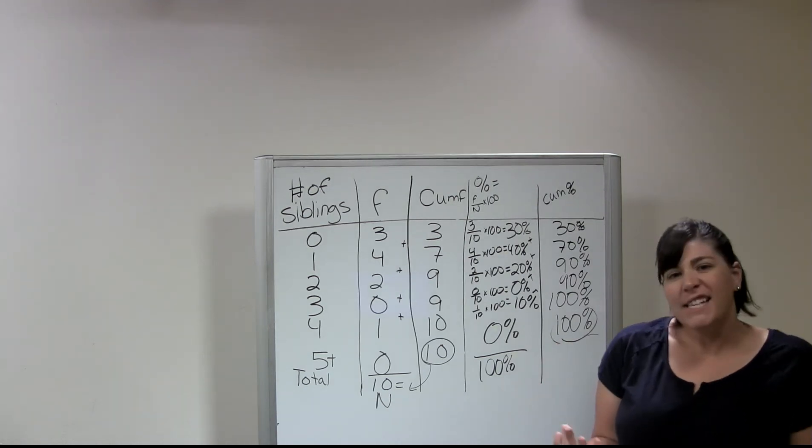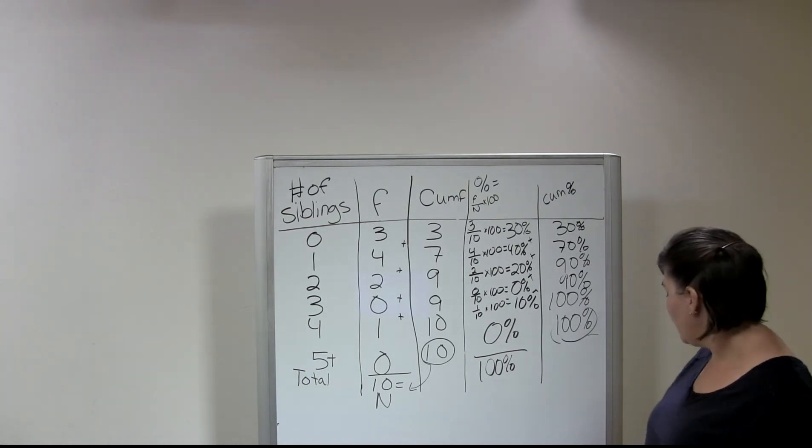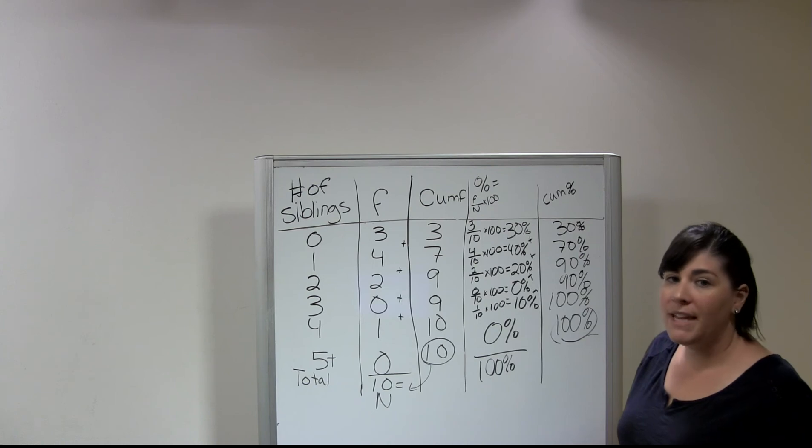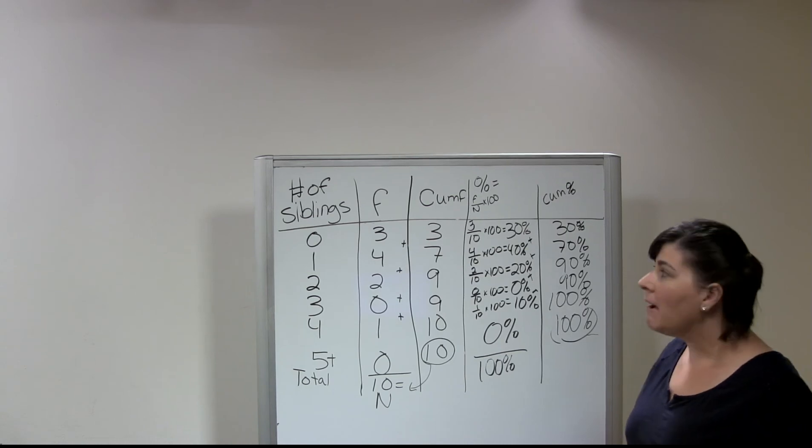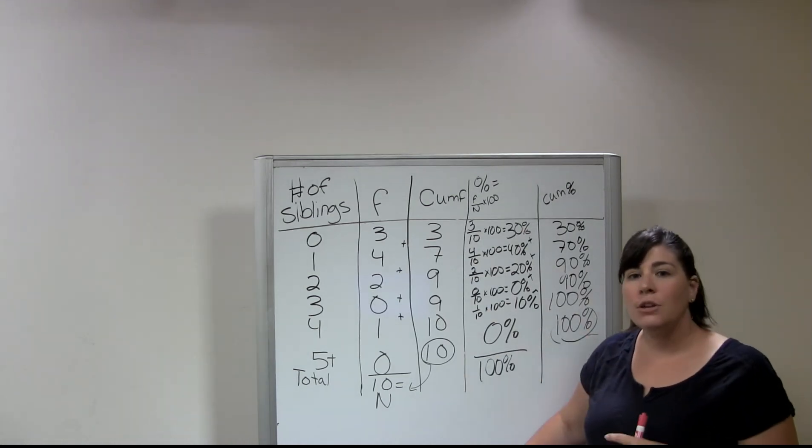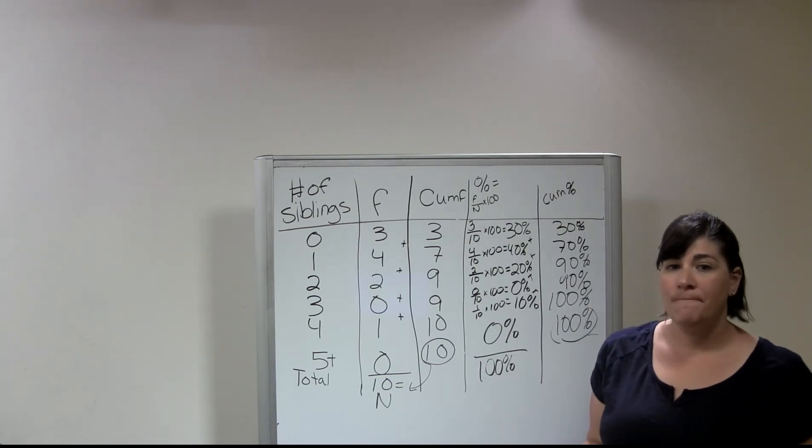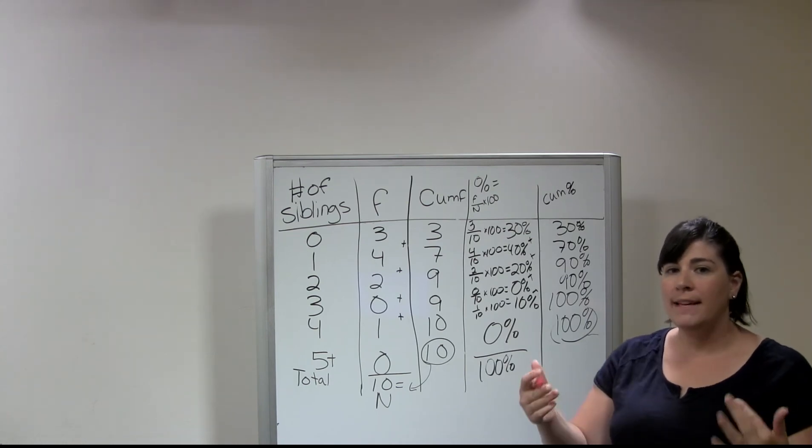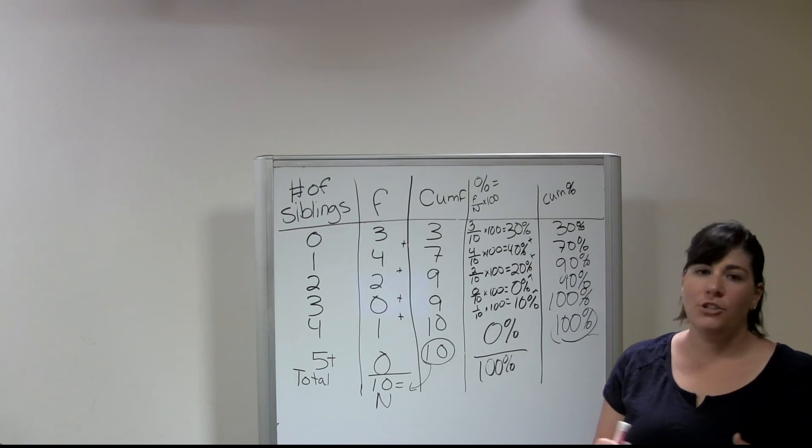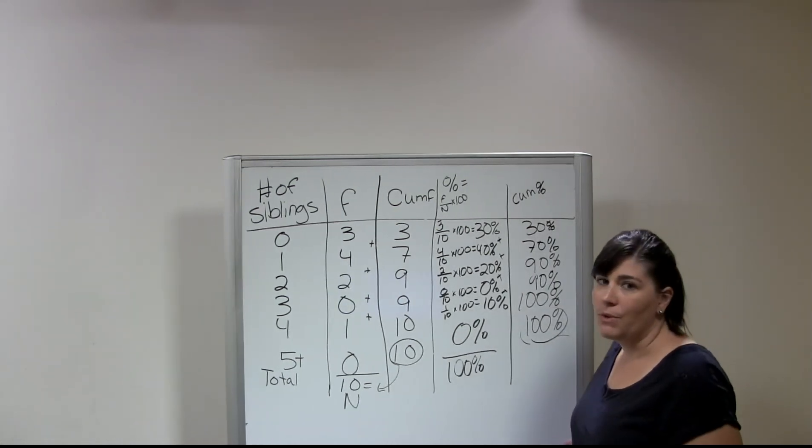The difficult part or what I found in my experience that students have difficulty with is the interpretation of the frequency distribution. So when I say interpretation, what I'm talking about is how do I put this table into words? So an interpretation is simply a written explanation of the data and of the table. And so you should be able to read the interpretation. And if you're not looking at the table, it should make perfect sense. And so you can do it that way.